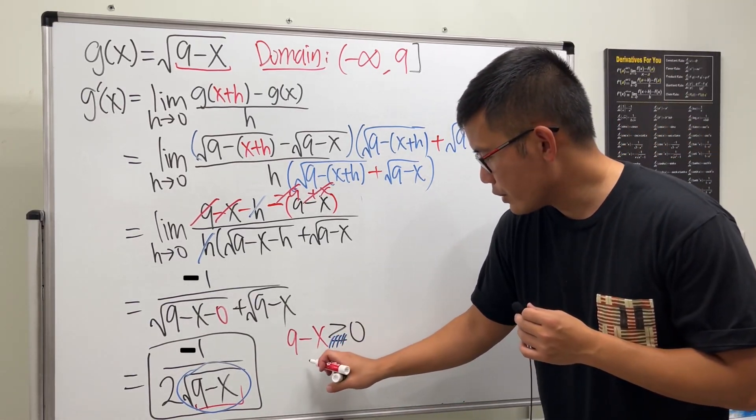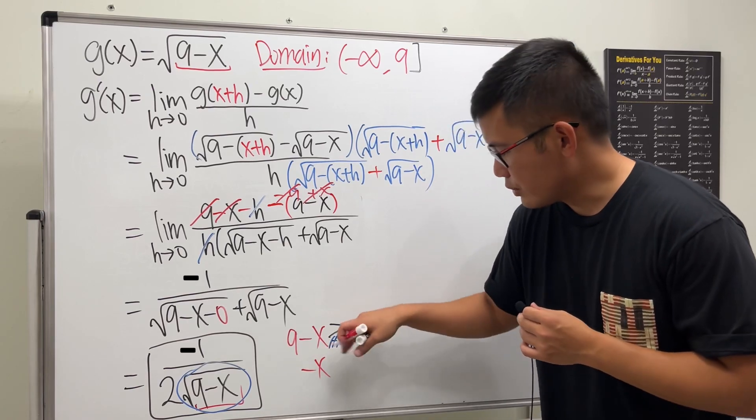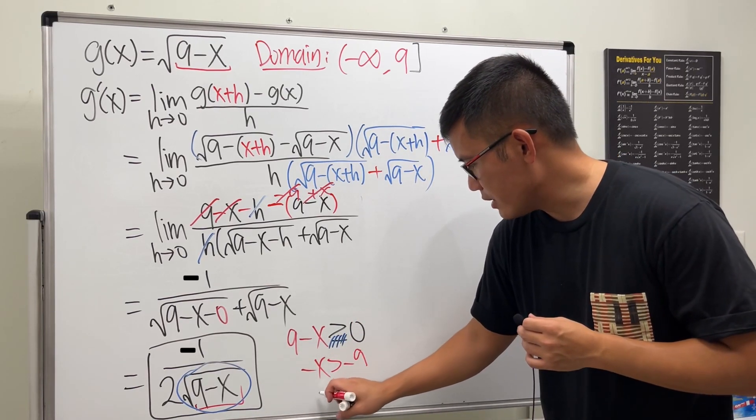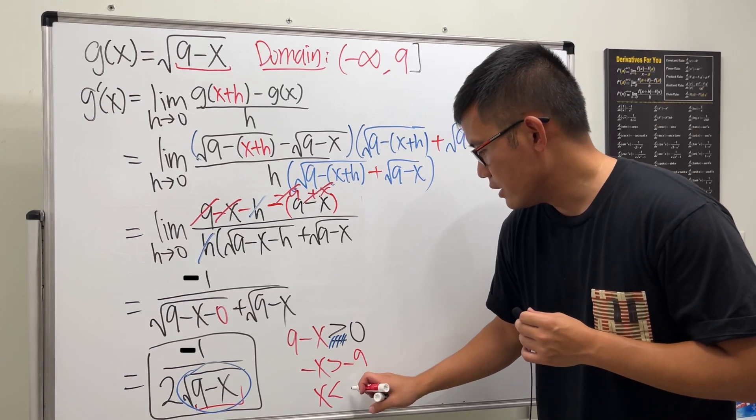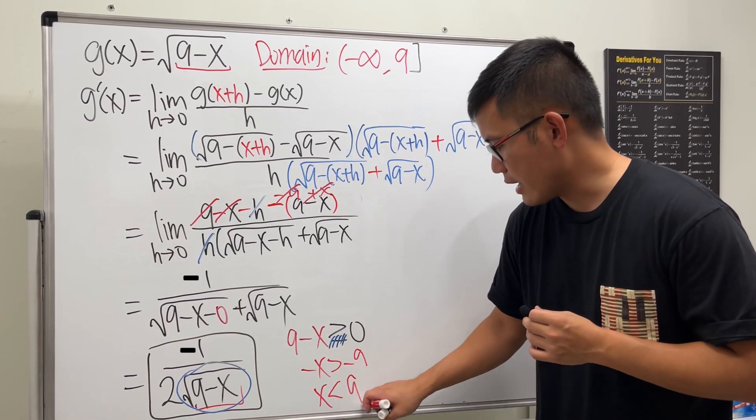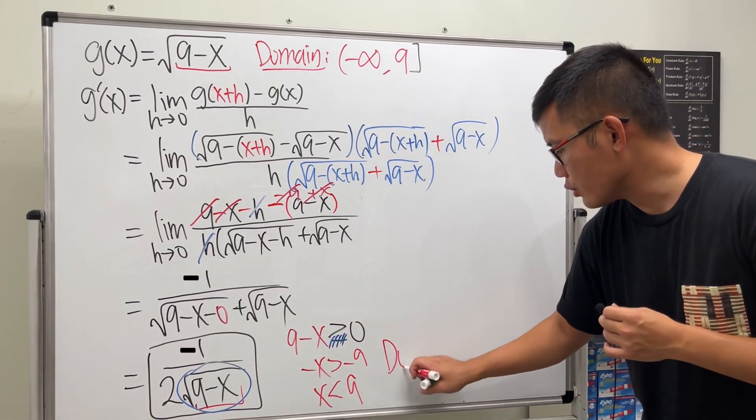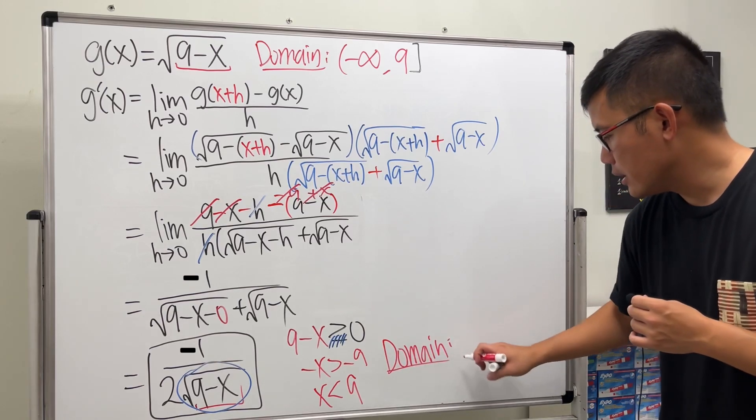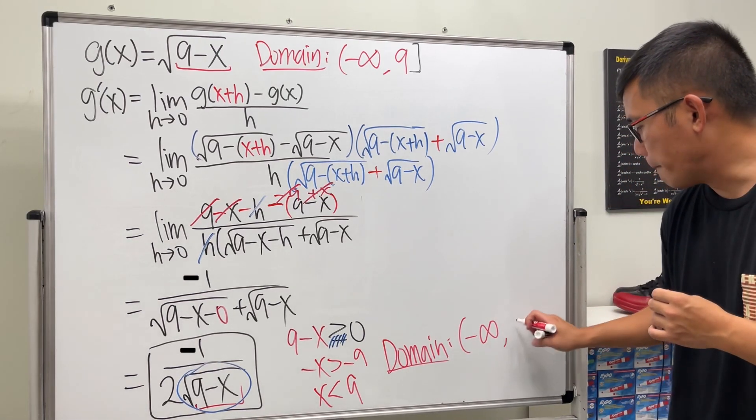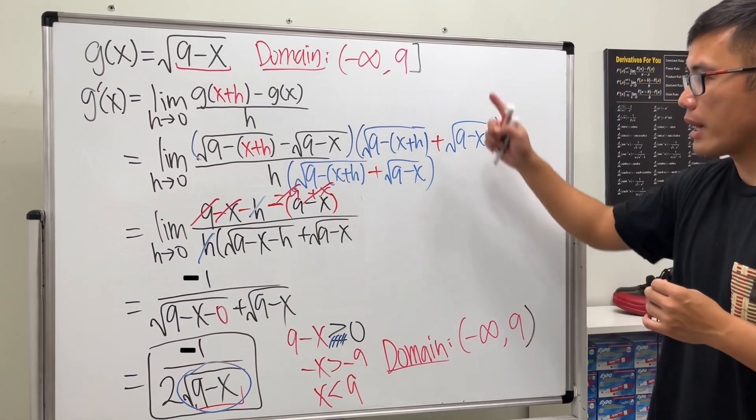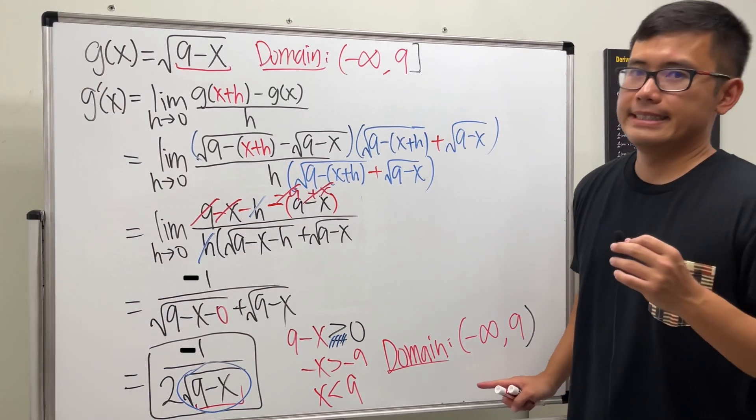So in this case we can just solve it real quick. I like to keep the inequality like this and just move the 9, and then divide both sides by negative 1, so x is less than, just less than now, 9. So no more equality. So the domain is just from negative infinity to positive 9. We do not have that bracket anymore.